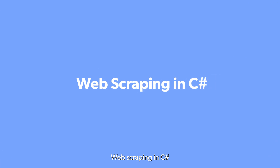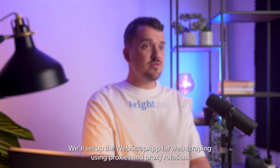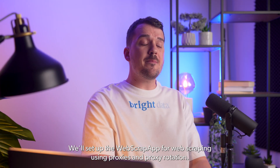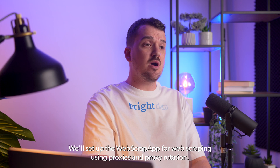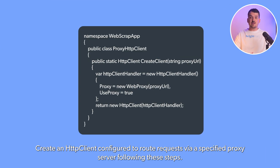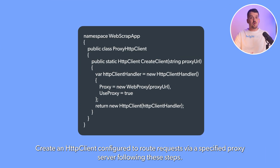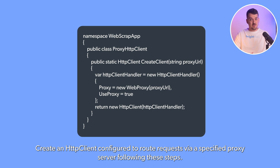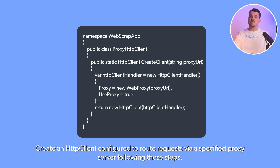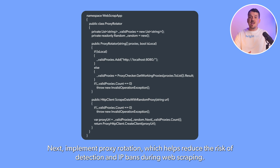Web scraping in C#. We'll set up the WebScrapApp for web scraping using proxies and proxy rotation. Create an HTTP client configured to route requests via a specific proxy server following these steps. Next, implement proxy rotation, which helps reduce the risk of detection and IP bans during web scraping.